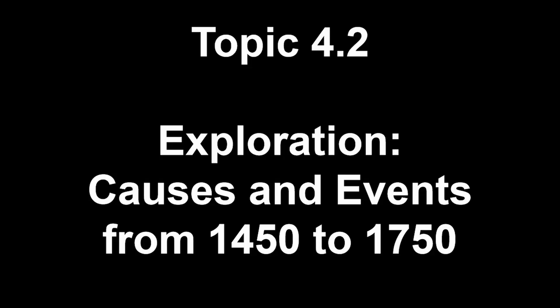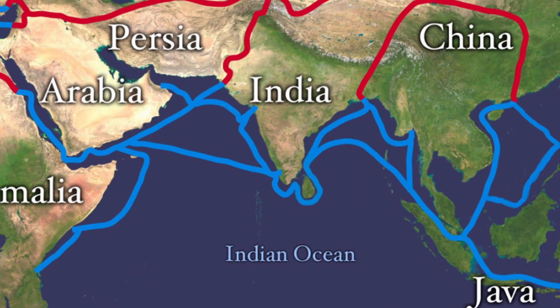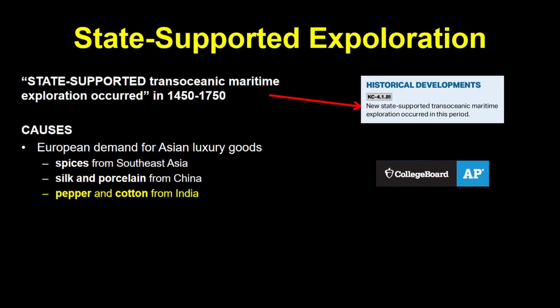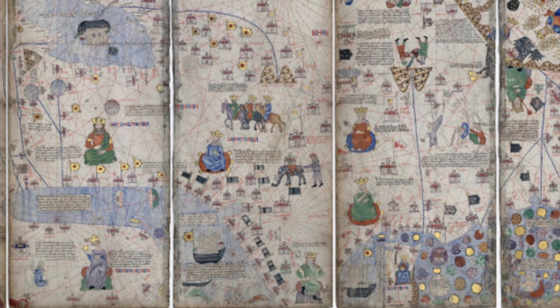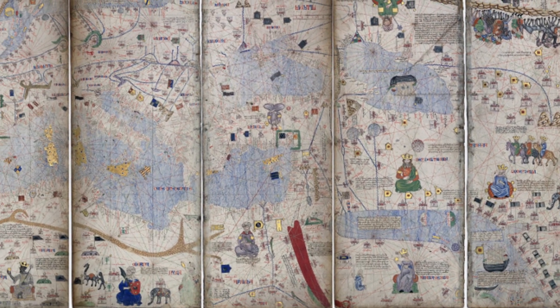Now let's take a look at 4.2 Exploration: Causes and Events. State-sponsored trans-oceanic maritime exploration occurred from 1450 to 1750 — so governments, especially European governments, were paying upfront. Why would governments pay for these risky ventures? They wanted access to luxury goods from Asia. We saw in Unit 2 how societies throughout Afro-Eurasia were becoming more connected through networks of exchange, and Europeans were developing a taste for Asian goods — spices, silk, and a lot of other stuff. But Europe was at the far end of these trade routes, and goods had to travel across vast distances through many merchants, each raising the price to make a profit.